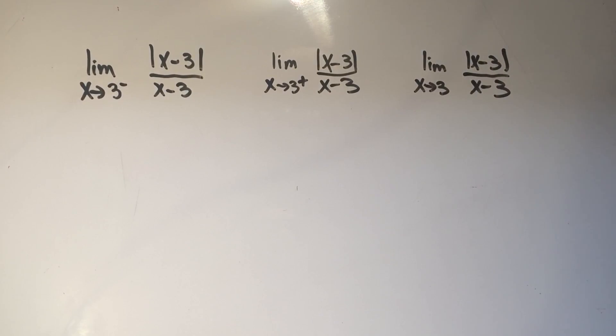Let's say you wanted to take some limits with absolute values in them. I have three different ones and they're all basically the same function, it's just this one I'm approaching three from the left side, this one I'm approaching three from the right side, and this one I'm approaching three from both sides. These are all going to be different answers because I've got three different ways of approaching.